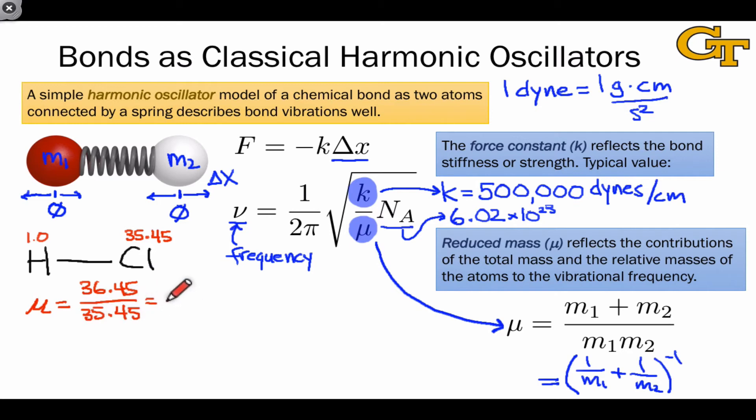So you can see that the reduced mass here is going to come out darn near the mass of the hydrogen atom. To be exact, it's 1.028 amu, with a relatively small contribution due to the much larger chlorine atom.